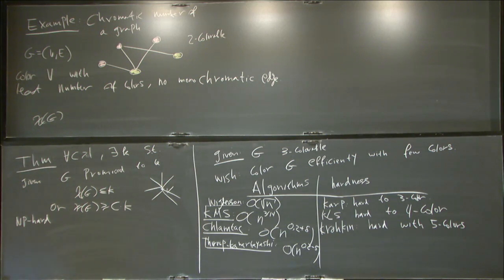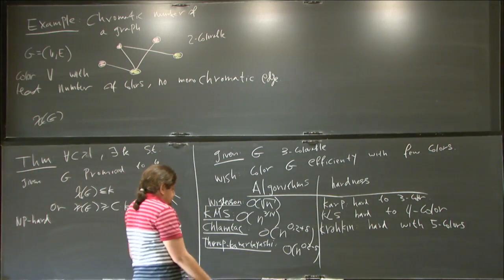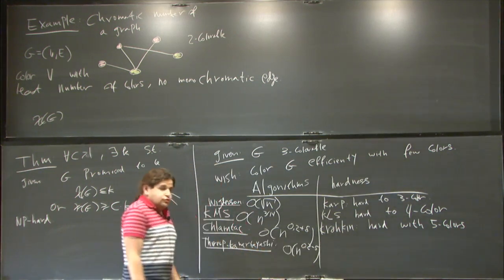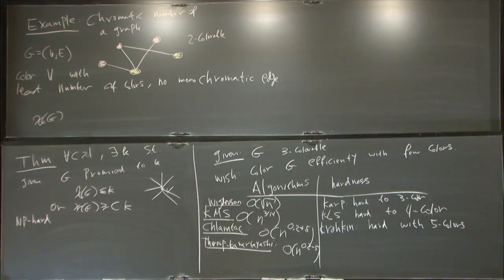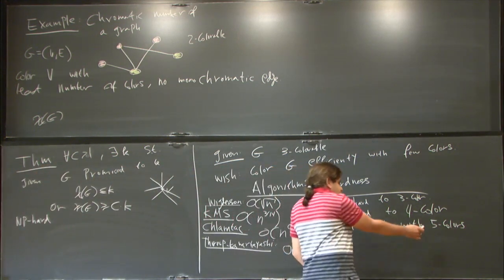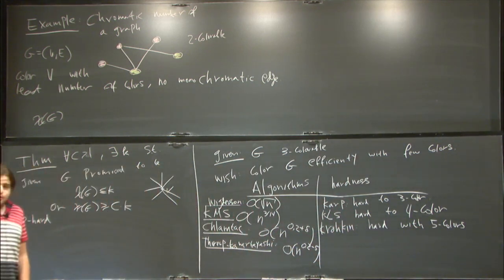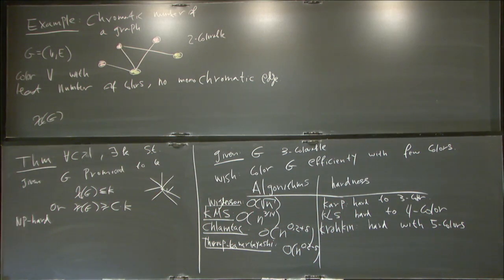So Thorup and Kawarabayashi, they improved it to a little bit below n to the 0.2. And this is the best that we know today. So we know that you cannot do it with five. And you can do it with slightly less than n to the 0.2. And clearly there is a huge gap. So what is it to answer?